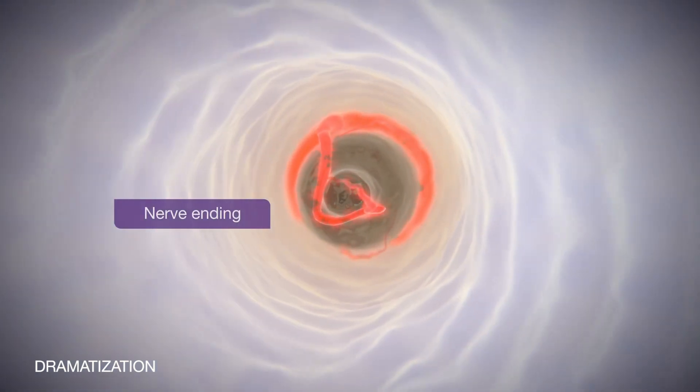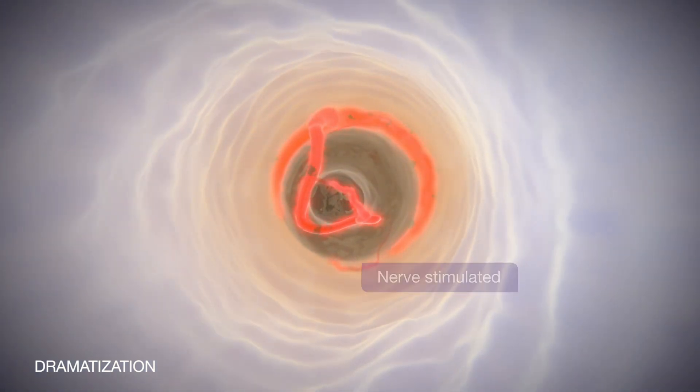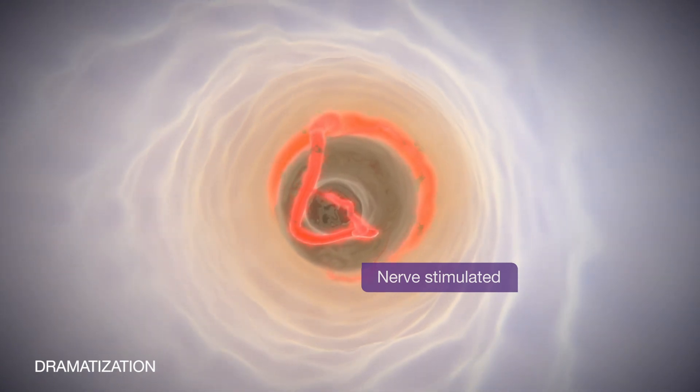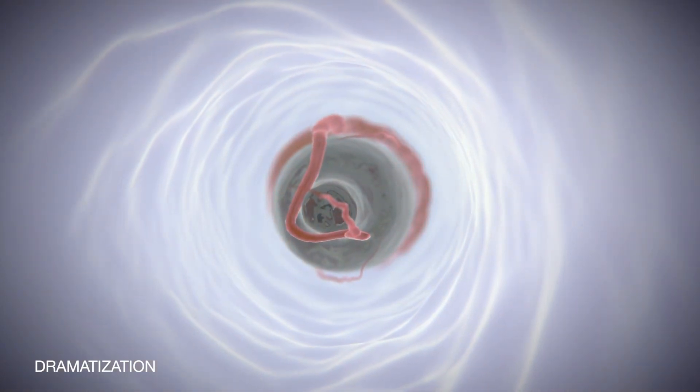Such movement can trigger the nerve endings, which can induce a short, sharp pain. Blocking dentin tubules is thought to limit the movement of fluid and therefore reduce sensitivity.